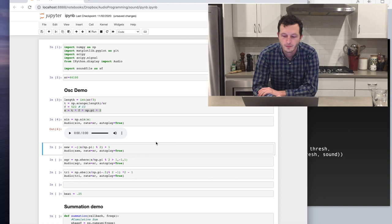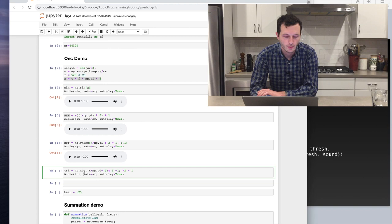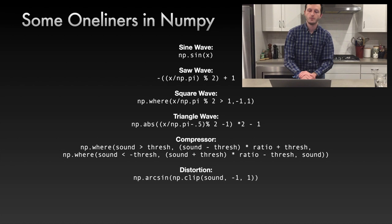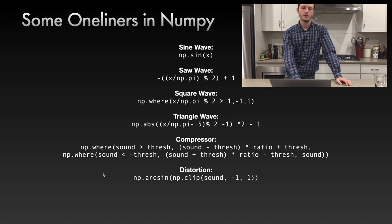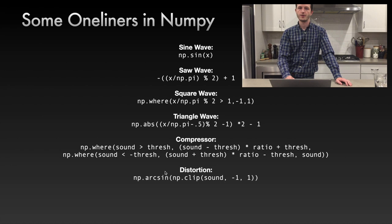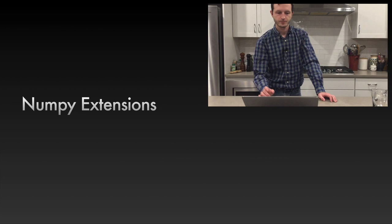Sawtooth is similarly easy — just use a modulus. Square uses a where statement, which is like an if statement. Triangle is the same as the saw but with an absolute value. A compressor is a nested where statement: where the sound is greater than the threshold, limit it downwards; where it's less than the negative threshold, limit it upwards; else pass the sound through. Distortion does a math operation on the whole array — here we clip from negative one to one and run it through an arcsine for a grungy feel.